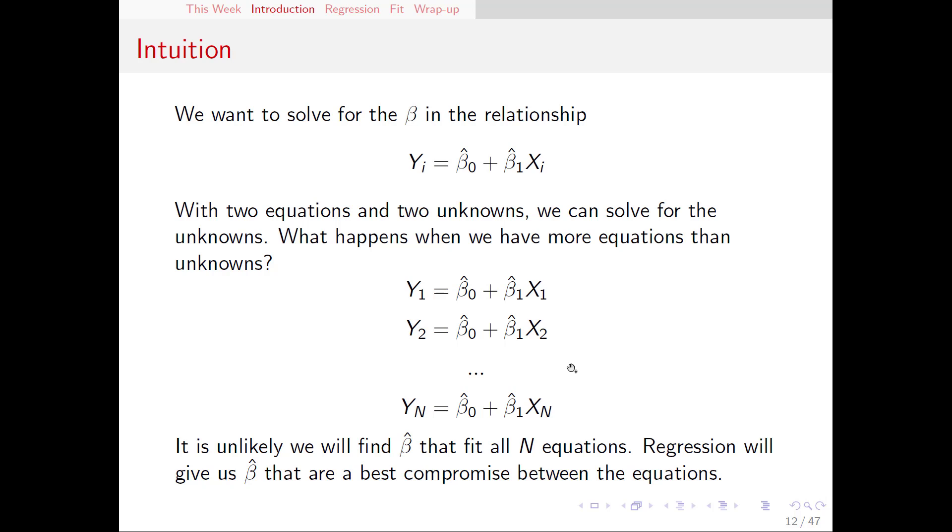So what we're going to have to do is come up with a compromise—come up with two numbers here for β₀ hat and β₁ hat that will get as close as we can to making these things true. And figuring out what that compromise is, is what regression is all about.